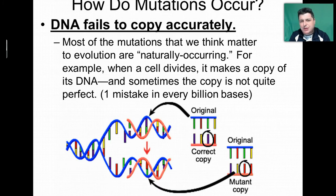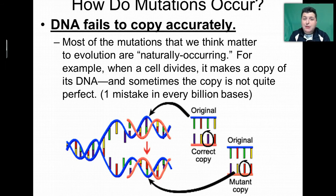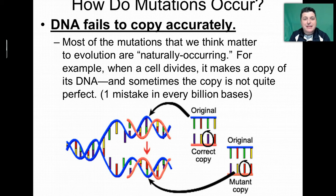So, how can mutations occur? There are several different ways that changes can crop up in our DNA. One way would be as an accident during DNA replication. Every time the cell divides, it has to copy that DNA without fail. And sometimes a copy isn't quite perfect — we get about one mistake every billion bases.